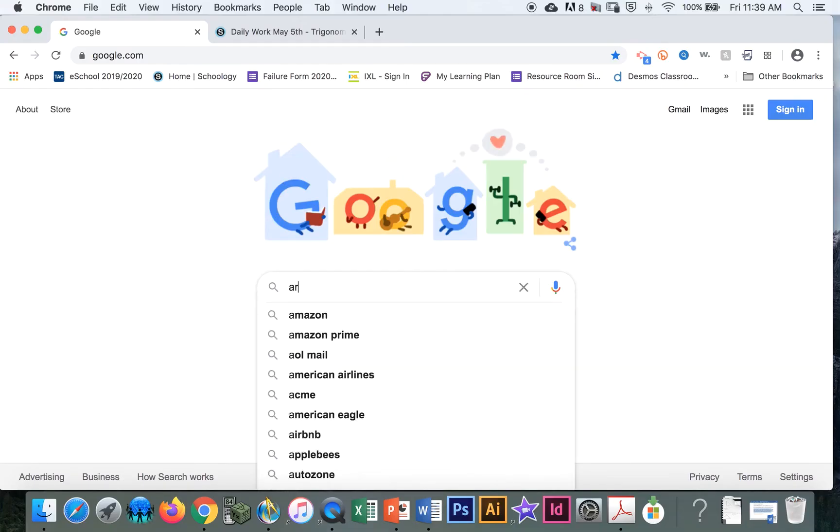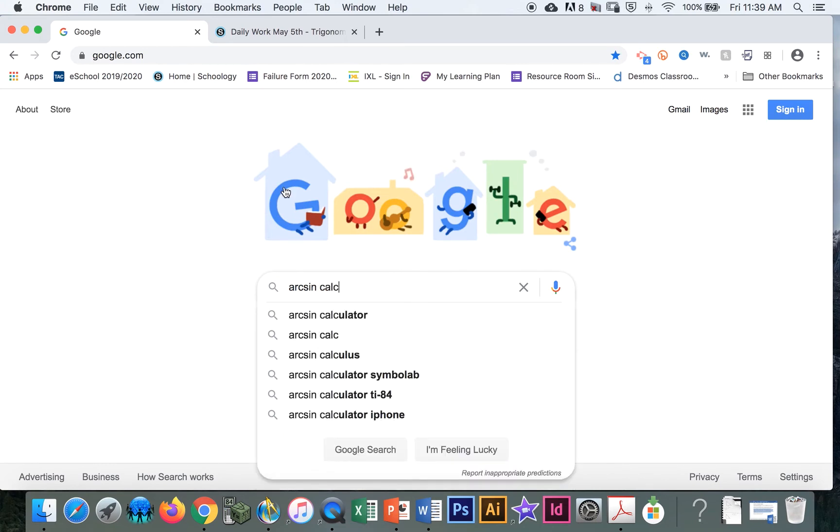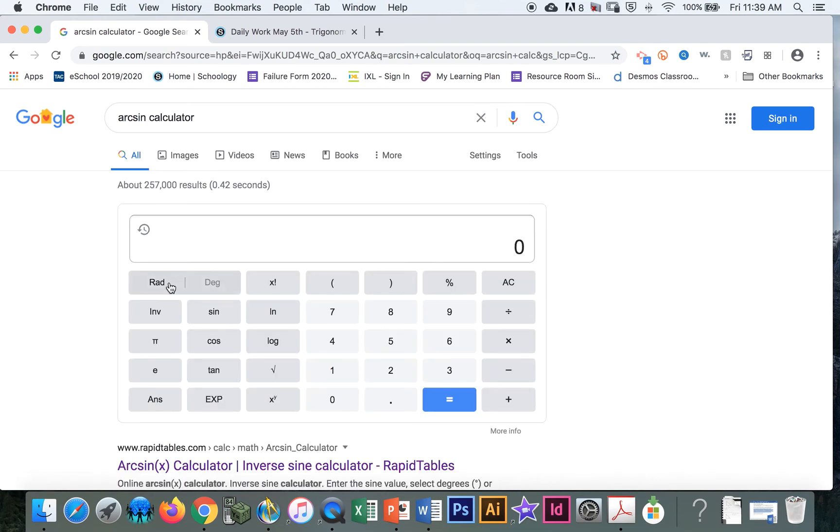Remember, we go to Google, type in arcsine calculator. We want to change this from radians to degrees, and then we just type in the tangent of 34 degrees and 0.6745, now it keeps on going, but we're just using the first four numbers, just like the table would use. So now let's go back to our problems.